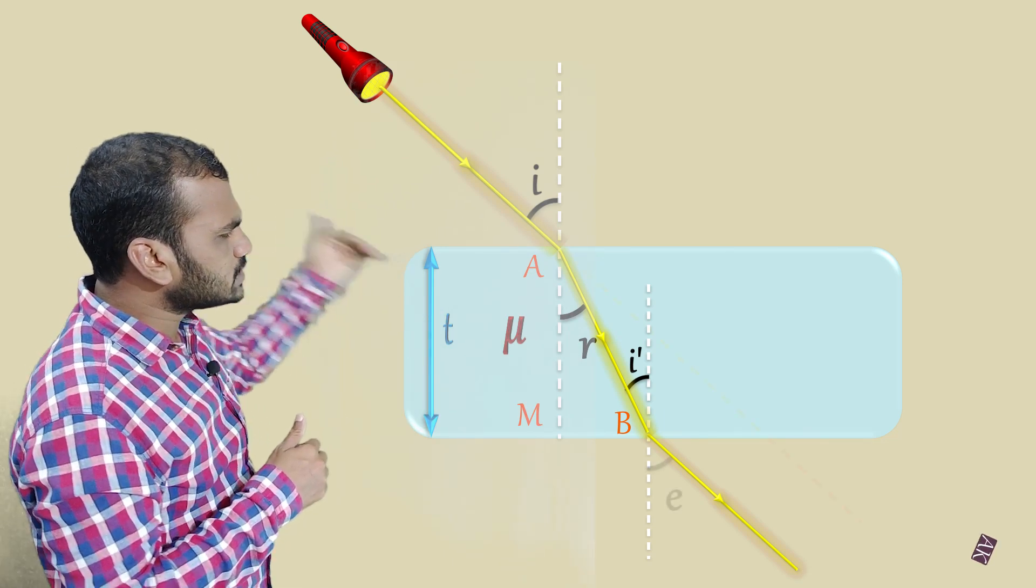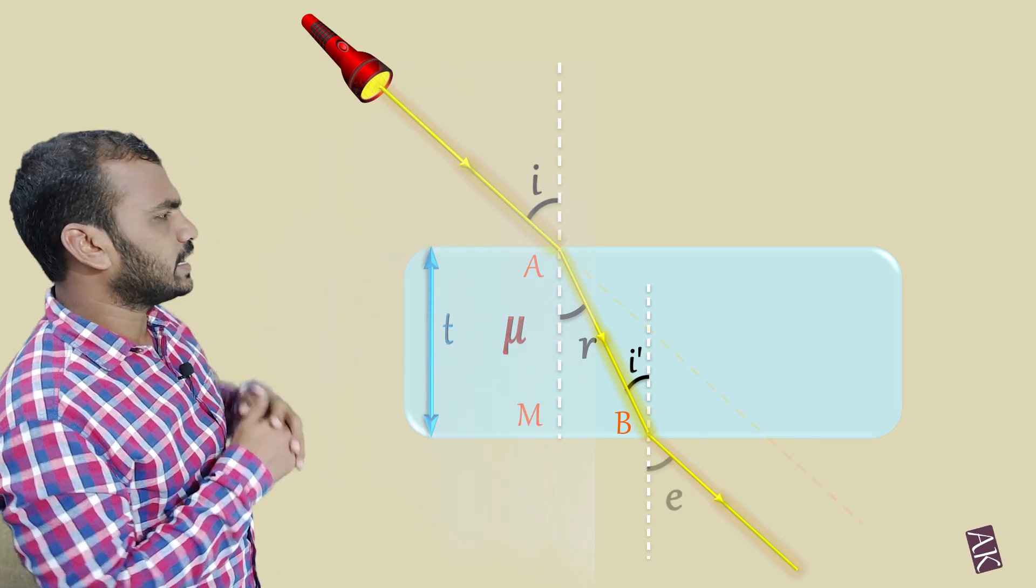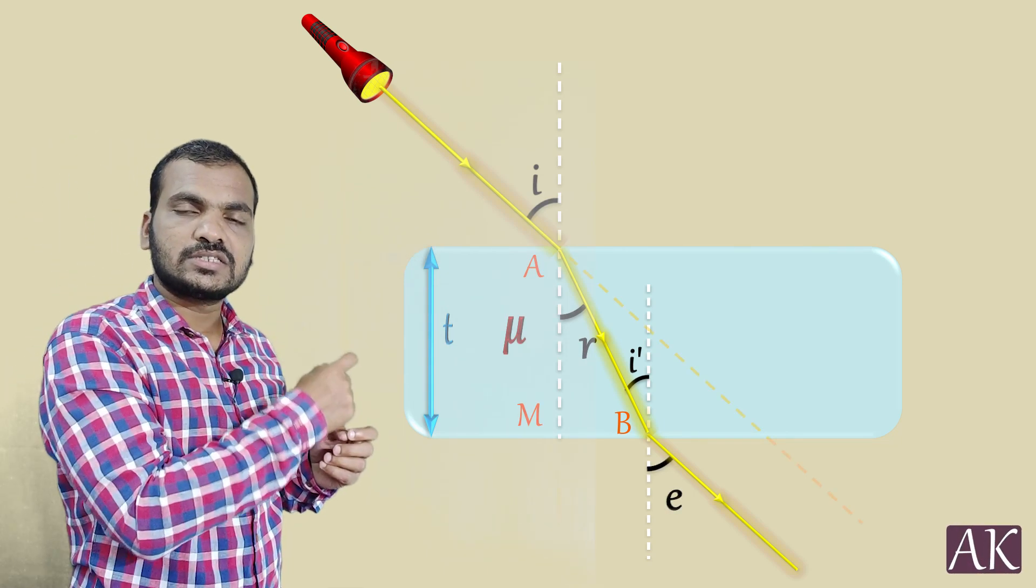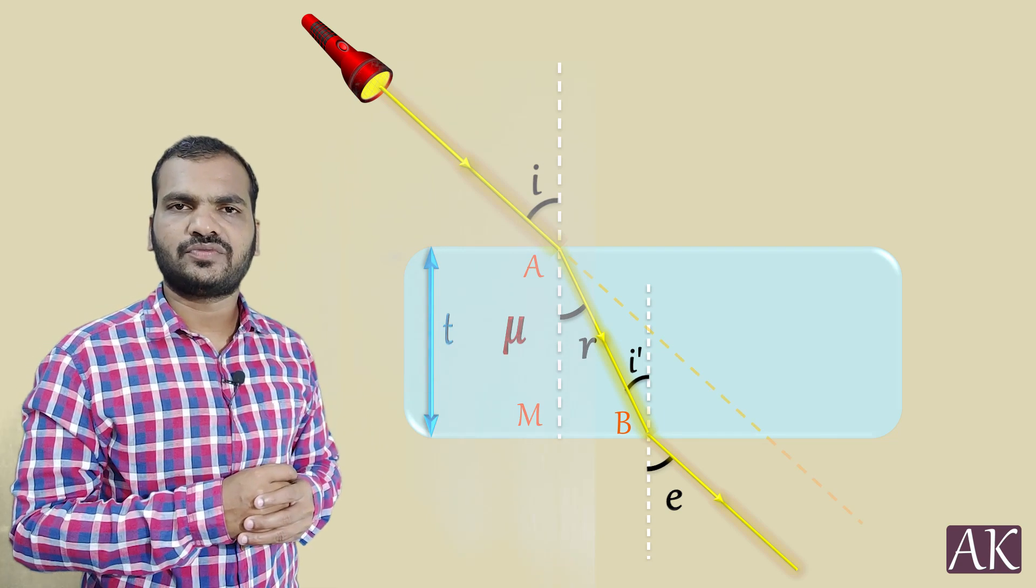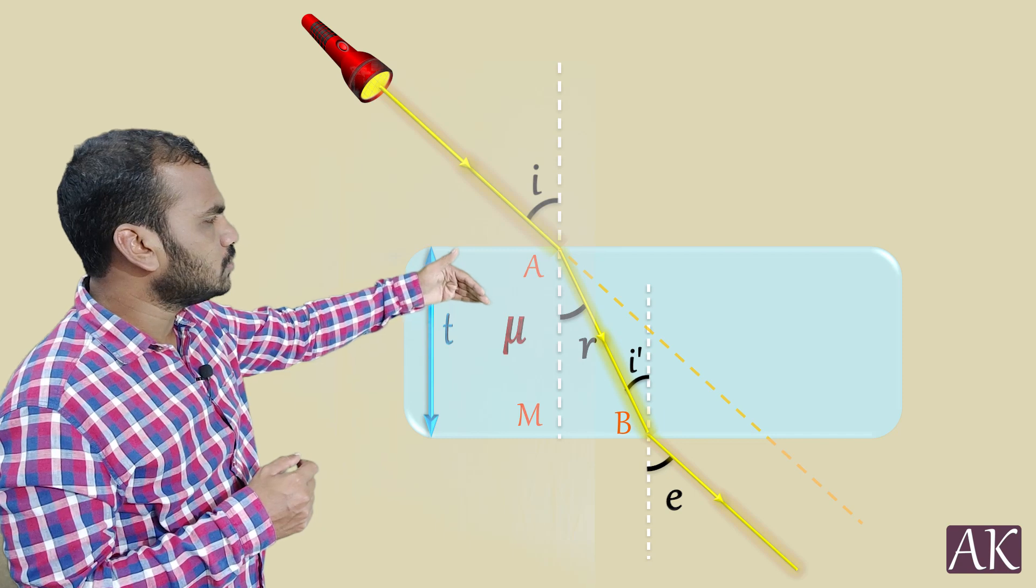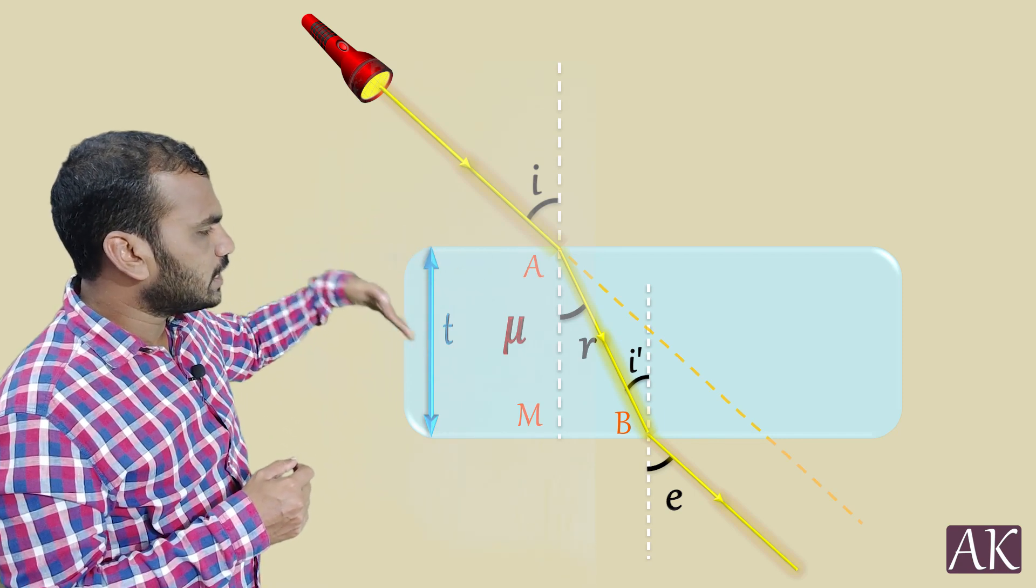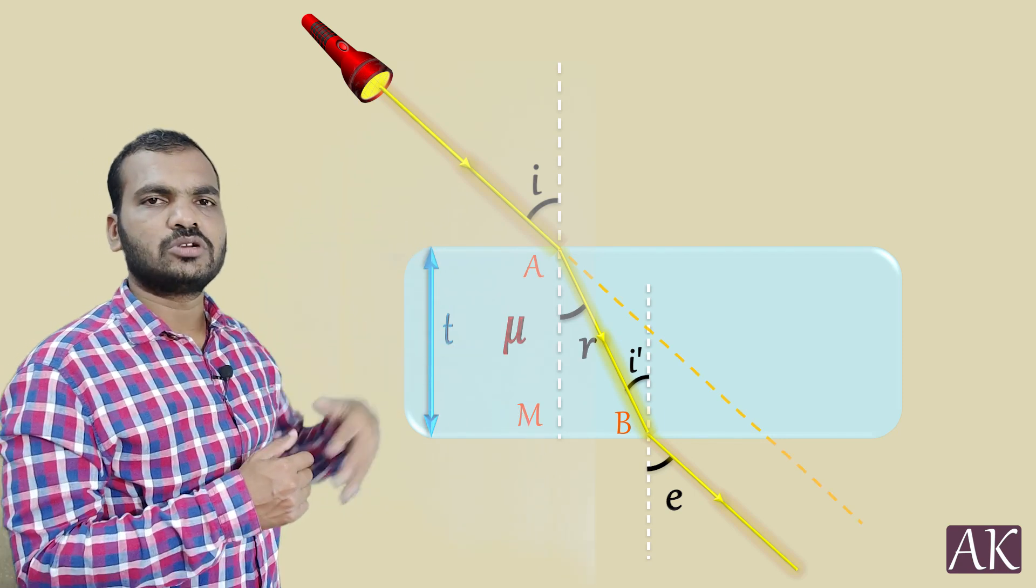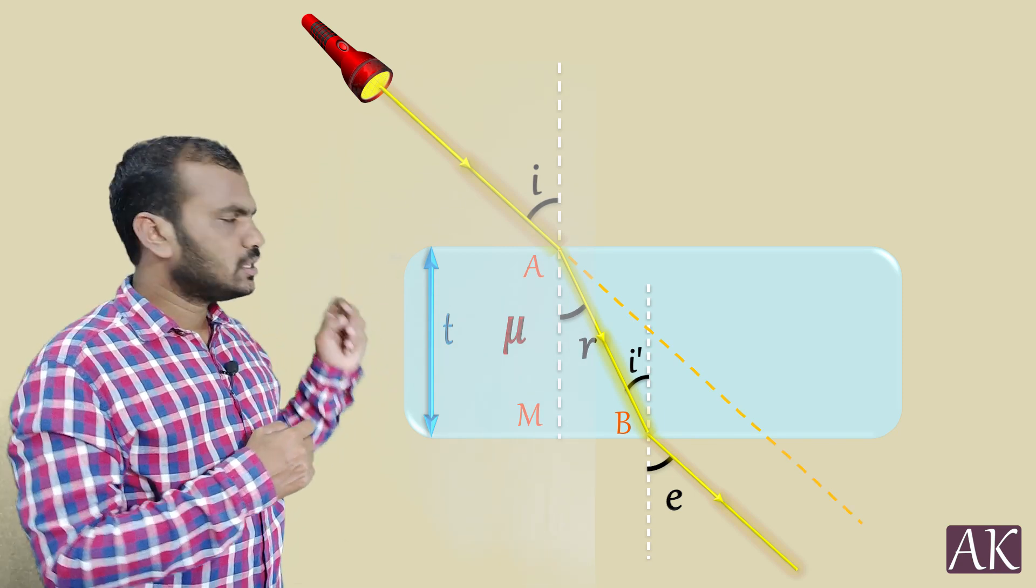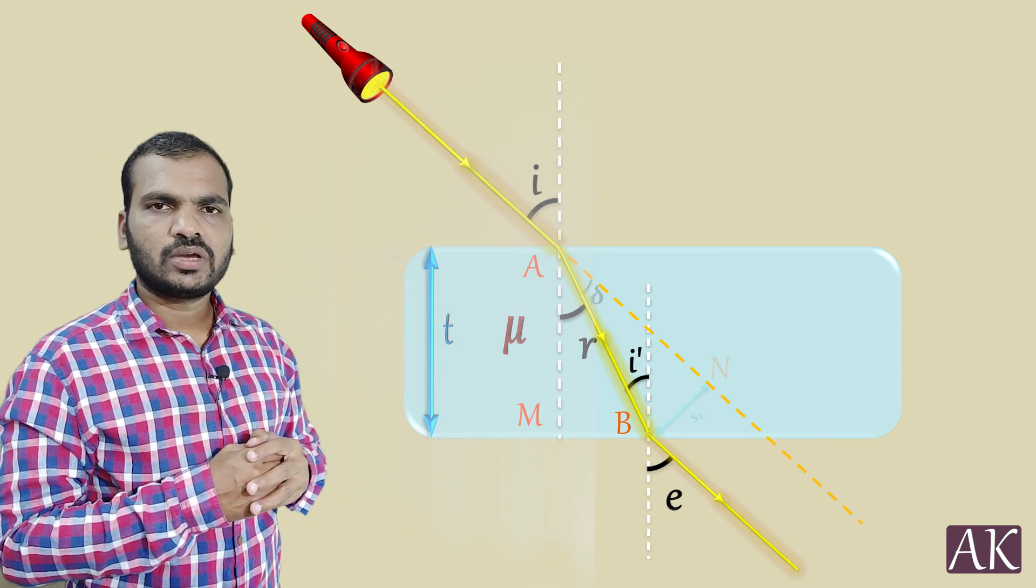The emerging ray is parallel to the incident ray. But instead of going straight it is shifted by certain distance. How much distance is it shifted? That is the distance which we call lateral shift. It would have continued along the dotted line but instead it is moving at certain other point from B. So this is what we call lateral shift, the perpendicular distance between them.